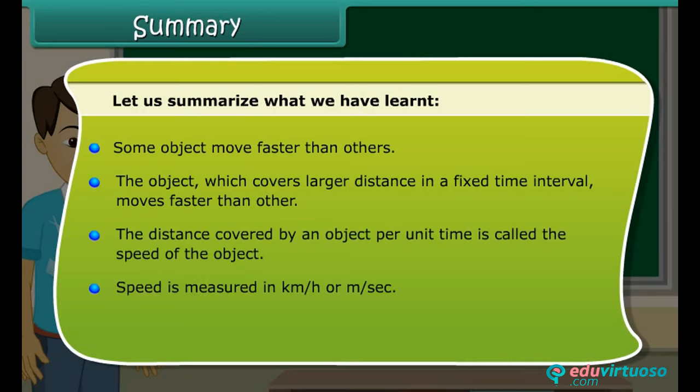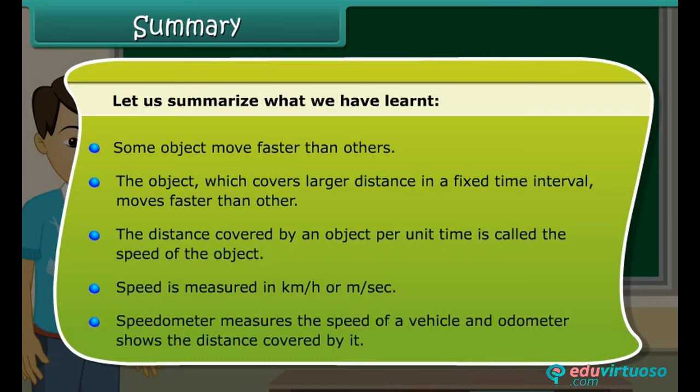Speed is measured in kilometer per hour or meter per second. Speedometer measures the speed of a vehicle and odometer shows the distance covered by it.